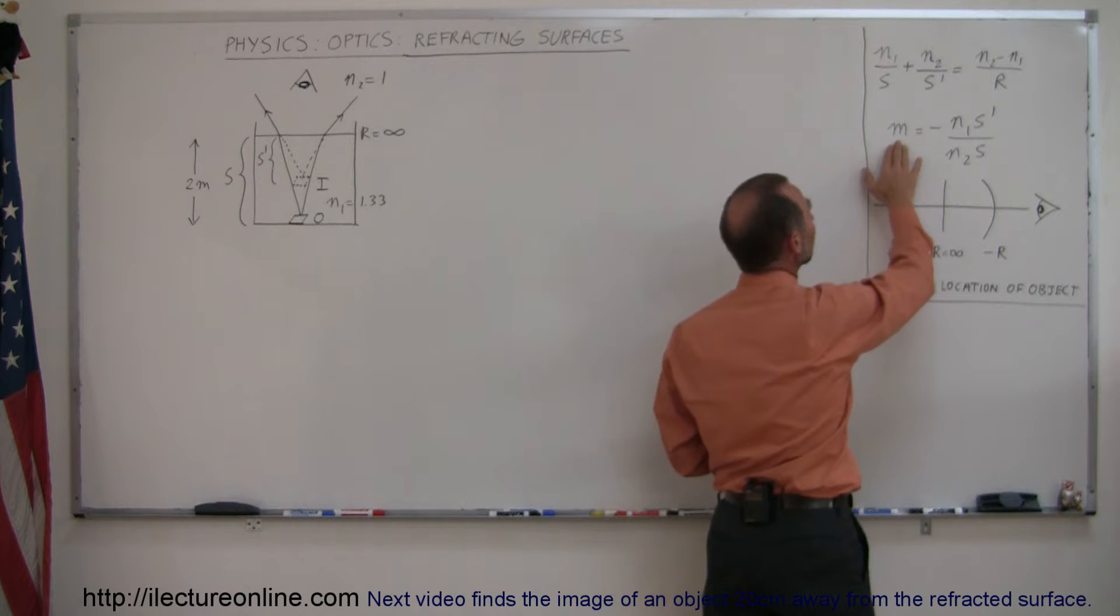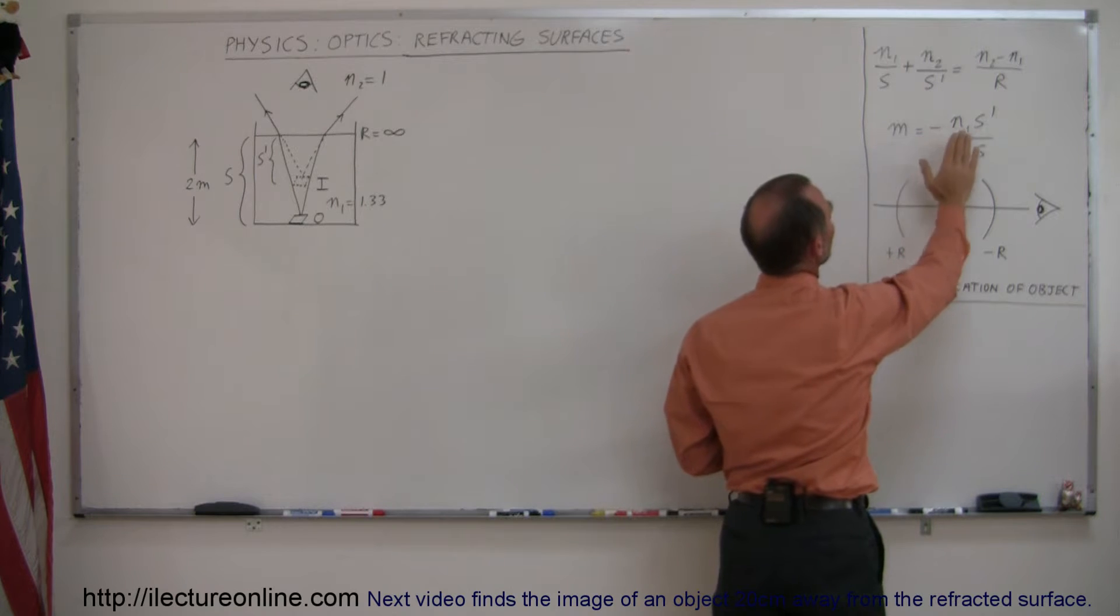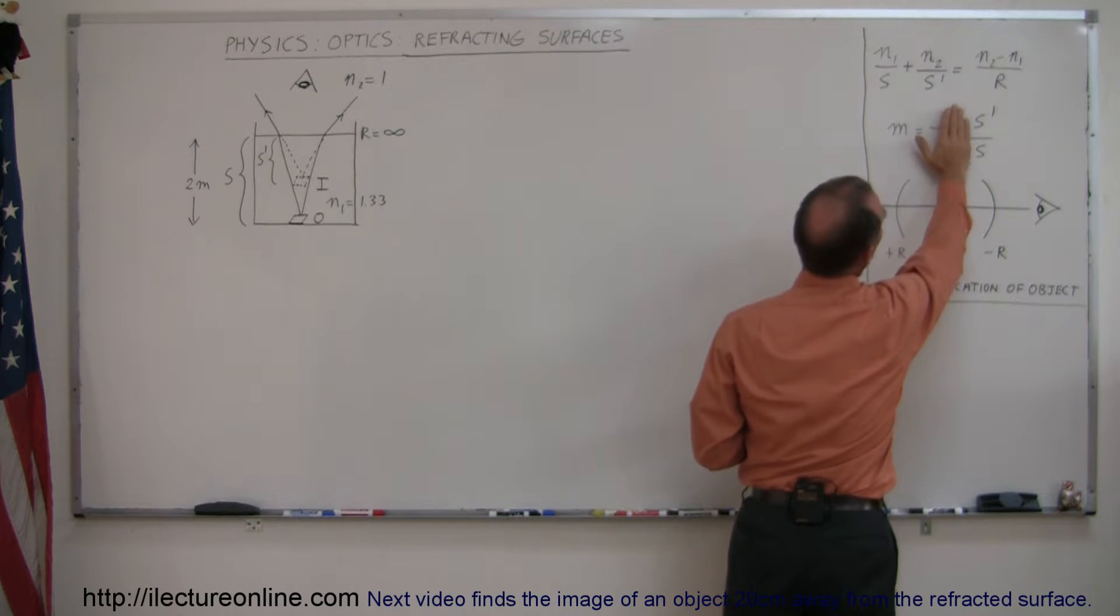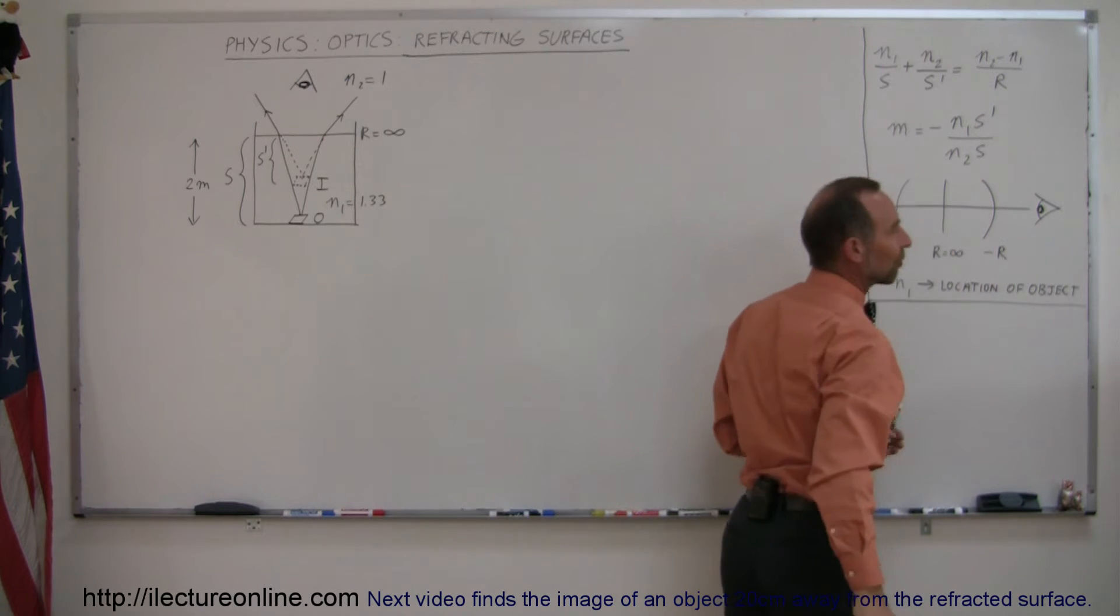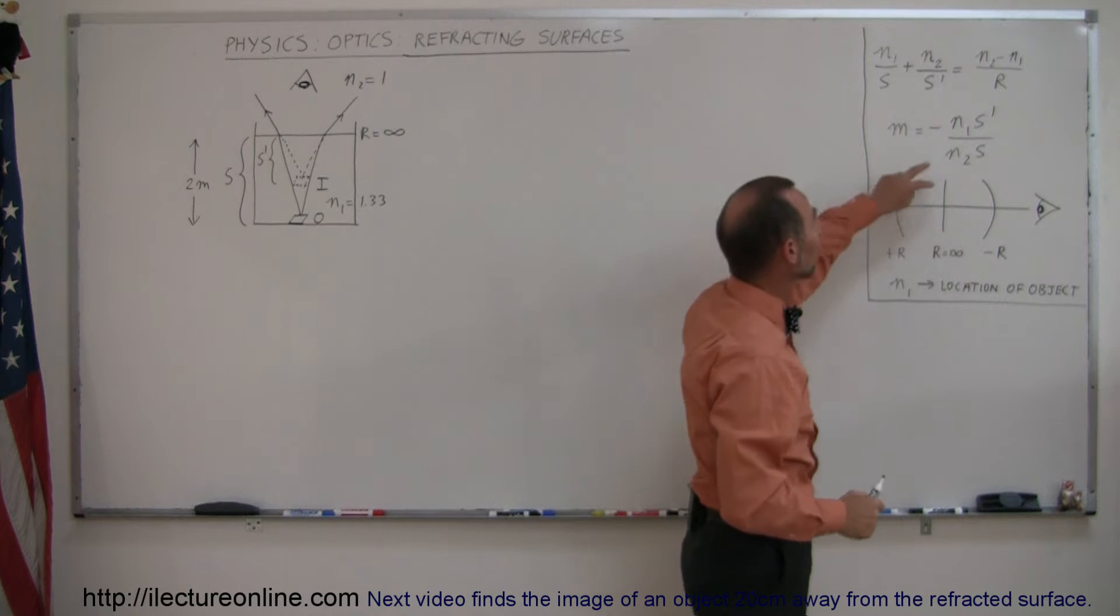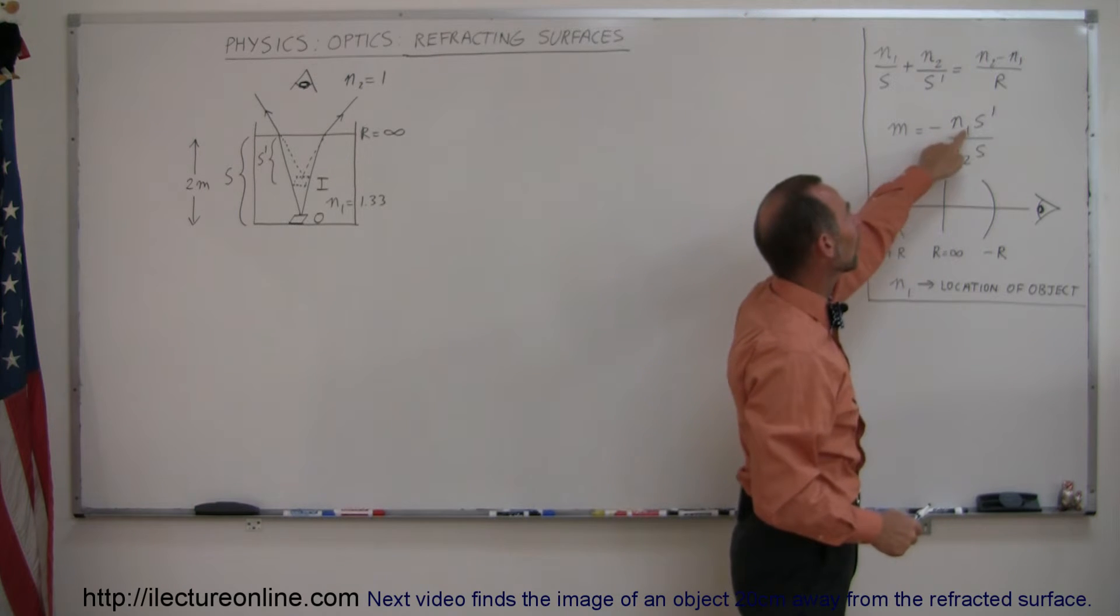To find the magnification of the image, normally if we didn't have refractive surfaces, that would be what we use for lenses and mirrors, but because the index of refractions may be different, we have to include that. It's minus N1 S prime.